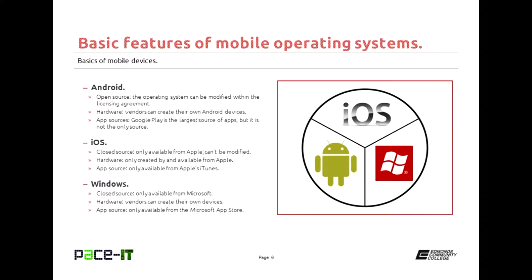The next largest player would be Windows or Microsoft. The operating system is closed source, so it's only available from Microsoft. But the hardware is open — anybody can create the hardware to run the operating system. Apps are only available from Microsoft's App Store. So Microsoft is kind of a mix between Android and Apple's models.